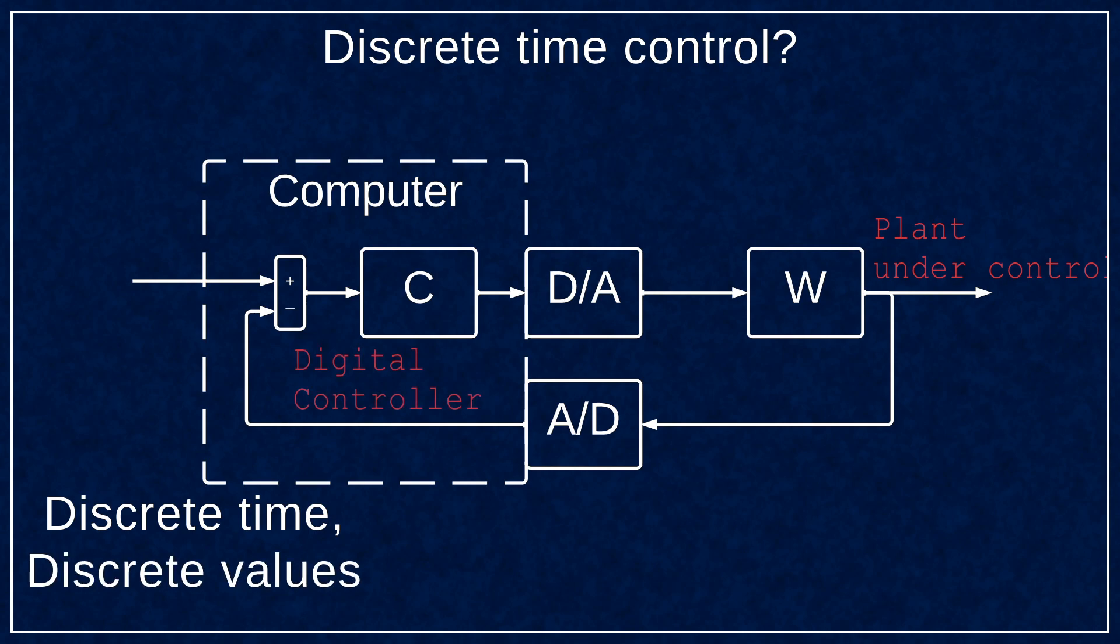Computers run on a clock signal and use binary operations. So they have finite resolution, they are discrete, both in time and values they can work with.